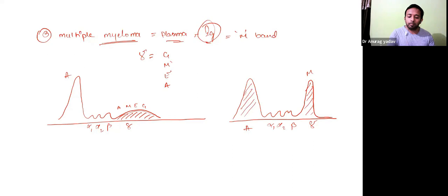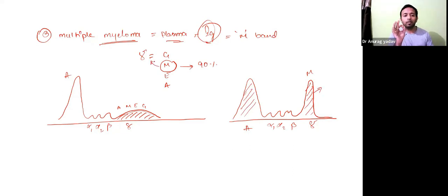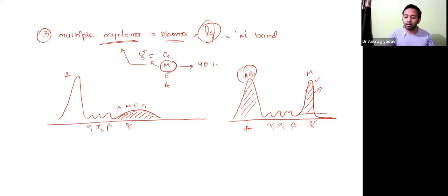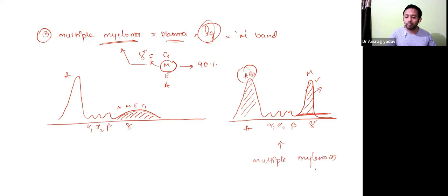In multiple myeloma, a particular immunoglobulin — say IgM — makes up 90% of the total. So there is a specific monoclonal immunoglobulin at high concentration in the blood. When you do electrophoresis, similar to the albumin band, you will see a tall band standing in the gamma portion. This tall band in the gamma portion is called the monoclonal band. If you see a monoclonal band on electrophoresis, it is definitively a case of multiple myeloma.